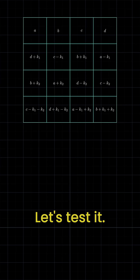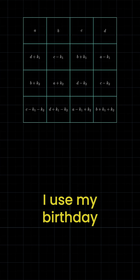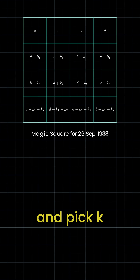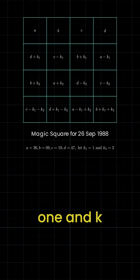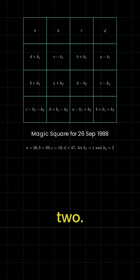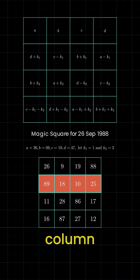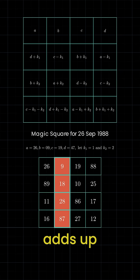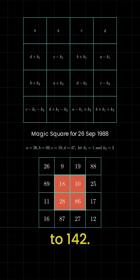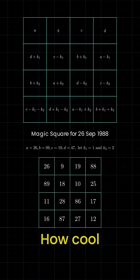Let's test it. I use my birthday and pick k1 equals 1 and k2 equals 2. And now every row, column, and diagonal adds up to 142. How cool is that?